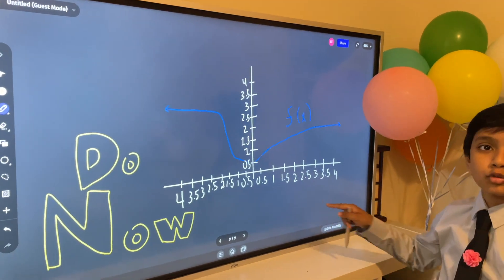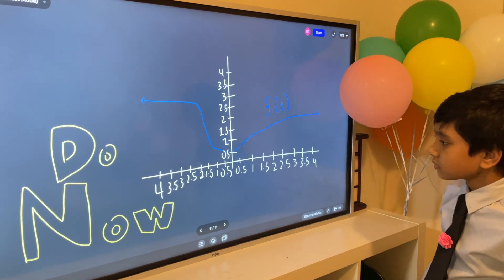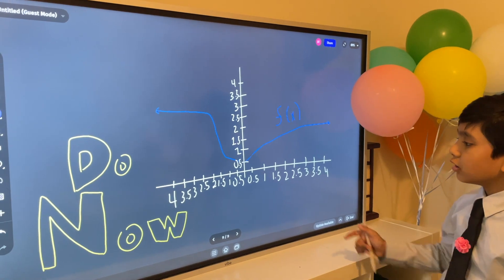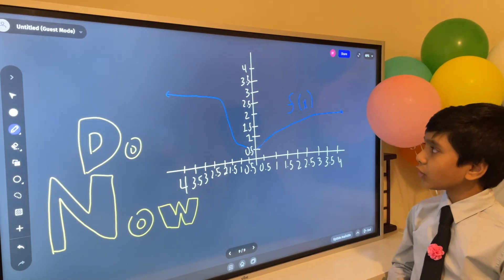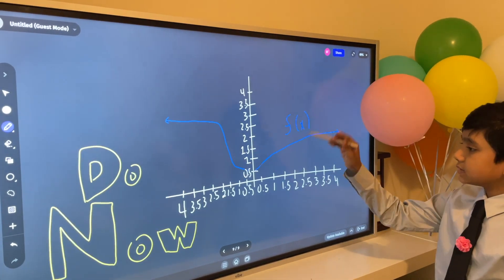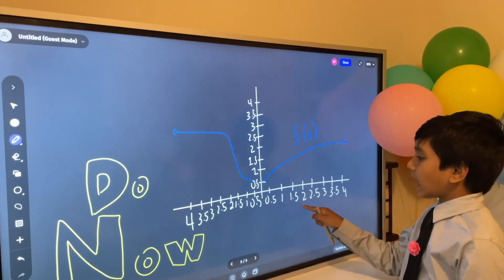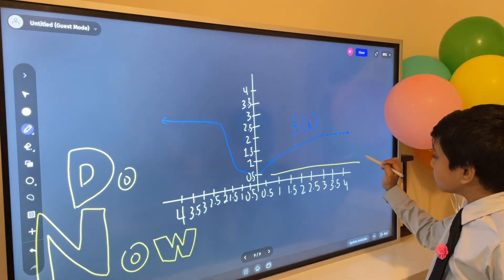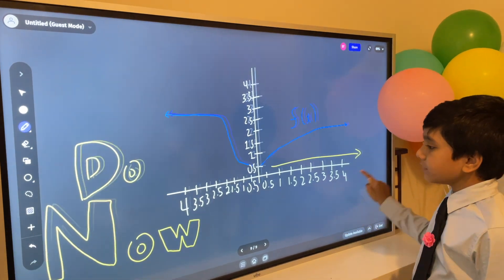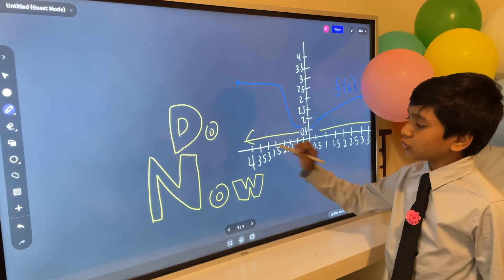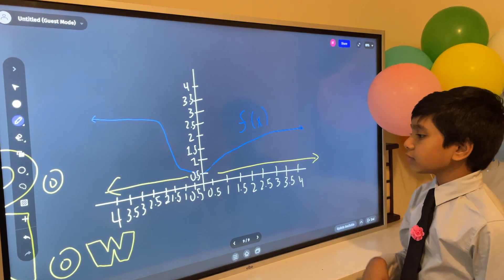And so here is our do-now. We want to see the behavior of function f(x) as it goes more and more to the left and more and more to the right.